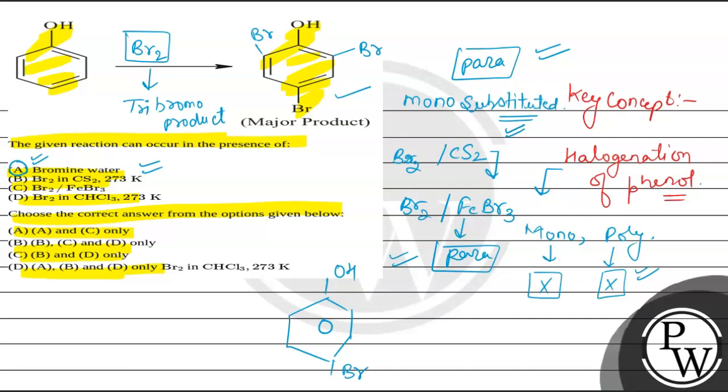And similarly when Br2 is being added in the presence of CHCl3, CHCl3 that is chloroform. So obviously again para product is formed.